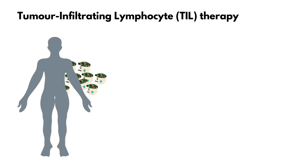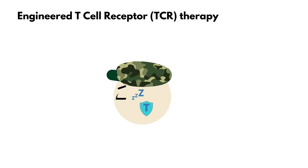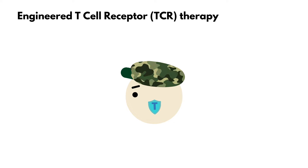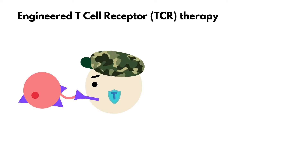The second type of adoptive cell therapy is the engineered T-cell receptor therapy. Besides activating and expanding T-cells, this therapy also equips the patient's T-cells with the sensor required to identify tumor antigens, called T-cell receptors. These receptors can be engineered to match the specific antigens on the patient's cancer cells, making this treatment more personalized.